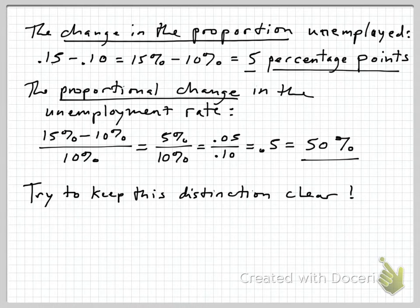The change in the proportion unemployed is just the change in the actual unemployment rate as measured either in proportions or percents, and that would be 0.15 minus 0.10, or 15% minus 10%. That's the change in the level of the unemployment rate, and that's five percentage points. And I want to stress that the best way to put it is in terms of percentage points. That's a change in the proportion.